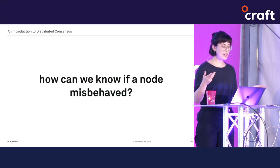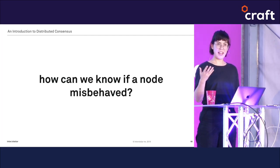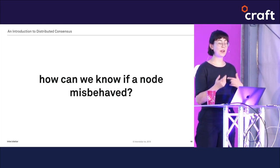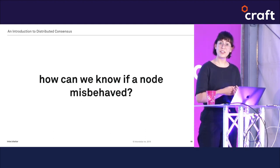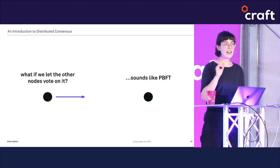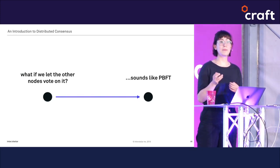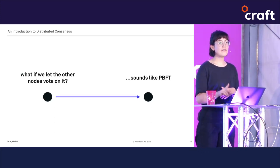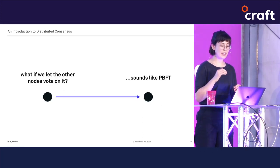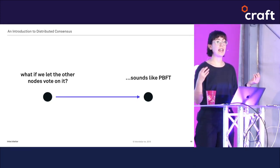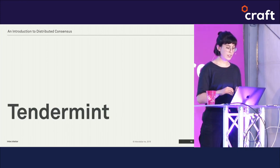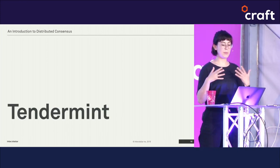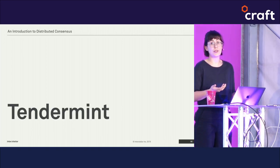How can we know if a proposer node has misbehaved? Maybe we need a way to let other nodes vote on whether a proposer node is suggesting valid values. That word "vote" should bring you back to Paxos and PBFT. In fact, there are consensus algorithms that combine the strengths of both proof of stake and PBFT. A popular option is Tendermint, which lets nodes vote on proposed blocks using a technique that looks a lot like PBFT.